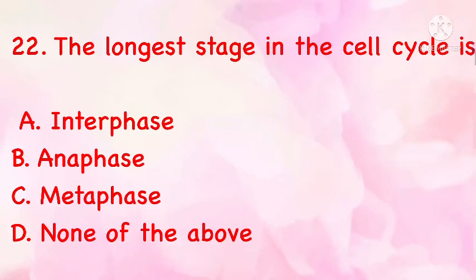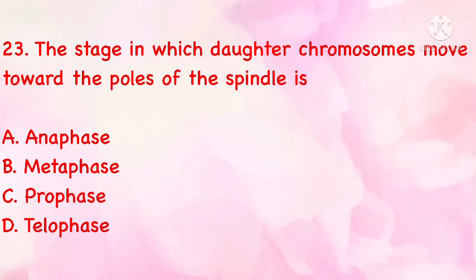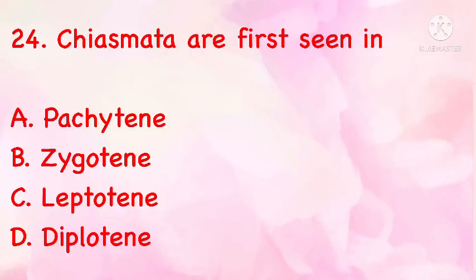The longest stage in the cell cycle is: (a) interphase, (b) metaphase, (c) none of the above. The correct answer is (a): interphase. The stage in which daughter chromosomes move toward the poles of the spindle is: (a) anaphase, (b) metaphase, (c) prophase, (d) telophase. The correct answer is (a): anaphase. Chiasmata are first seen in: (a) pachytene, (b) leptotene, (c) zygotene, (d) diplotene. The correct answer is (d): diplotene.